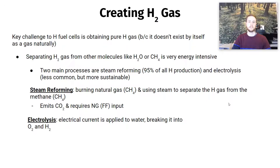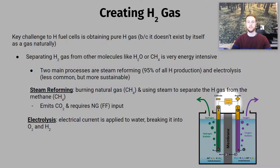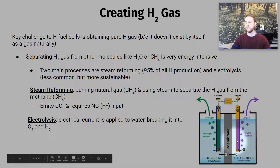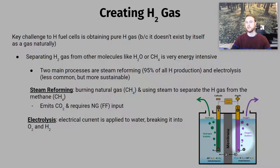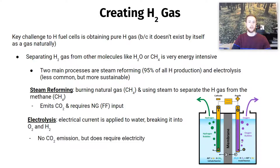Another method, which is potentially more renewable, is electrolysis. We apply an electrical current to a tank of water and it separates out hydrogen on one side and oxygen on the other. This is potentially very renewable, but the problem is it requires electricity. No CO2 is released directly by this process, but we have to ask: where does the electricity for electrolysis come from? There's no such thing as a free lunch — every process that creates hydrogen gas takes energy, and it's all about tradeoffs.